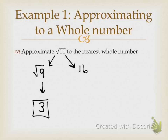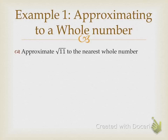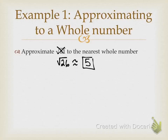Think you can do one? All right. Instead of the square root of 11, I want you to approximate the square root of 26 to the nearest whole number. What perfect square is 26 closest to? 25. This is how I want you to write it on your homework: the square root of 26 is approximately 5. The square root of 25 is 5, so the square root of 26 is going to be pretty close to 5.